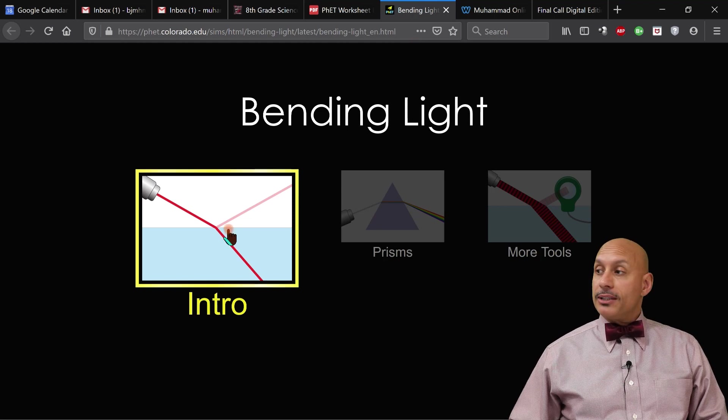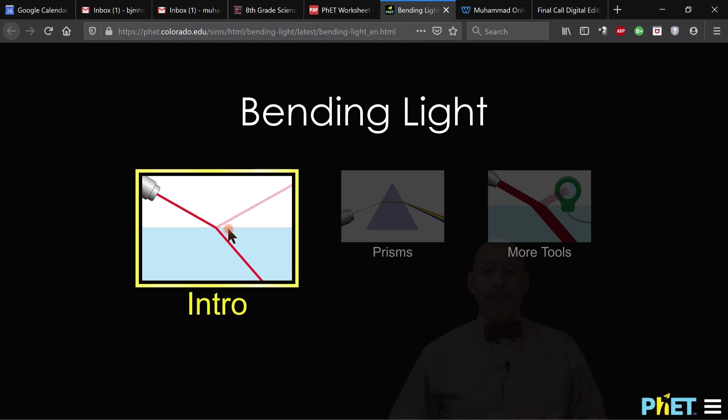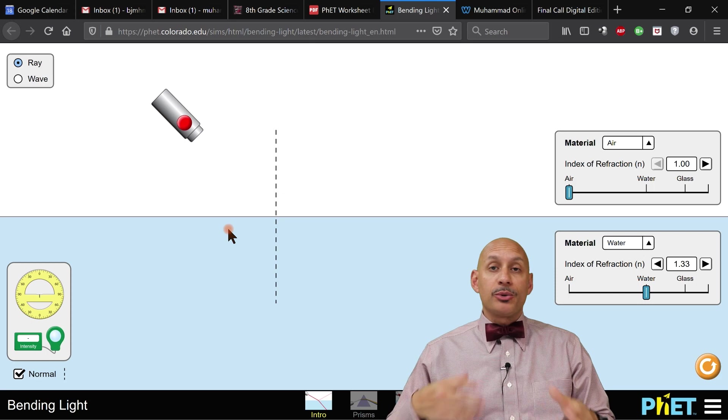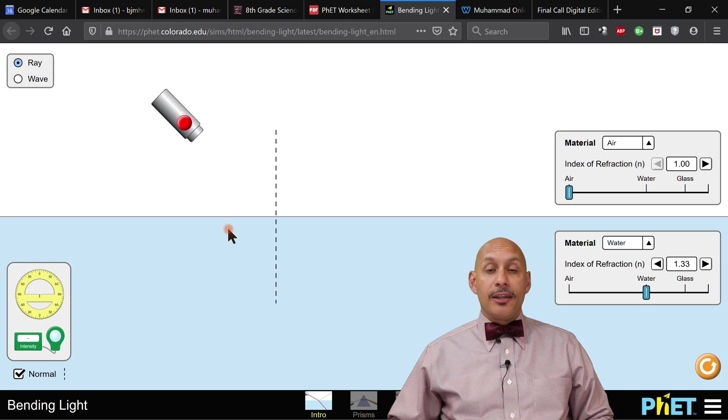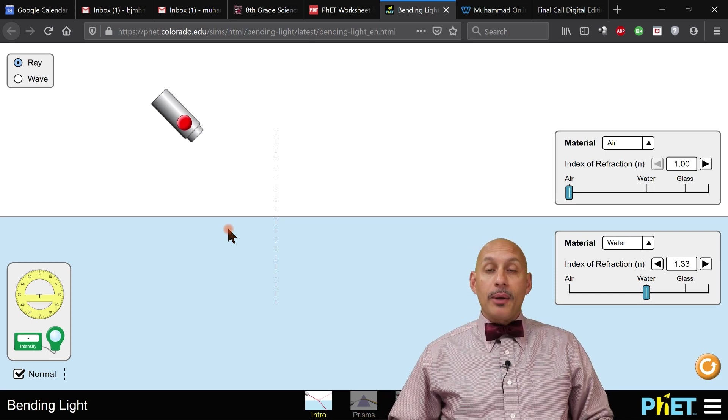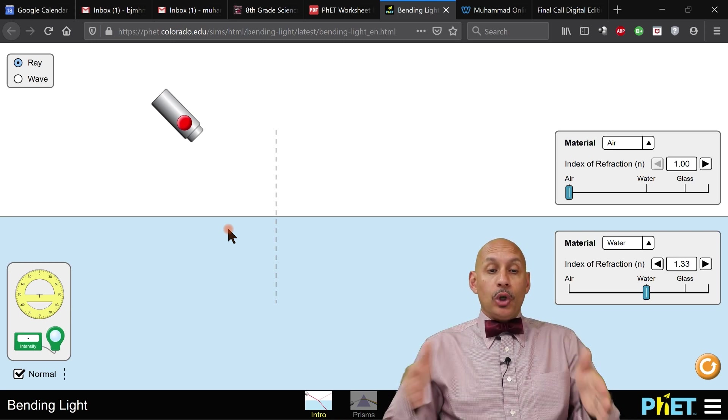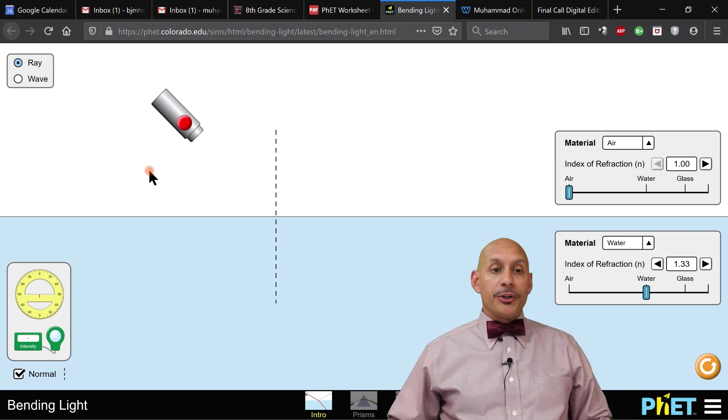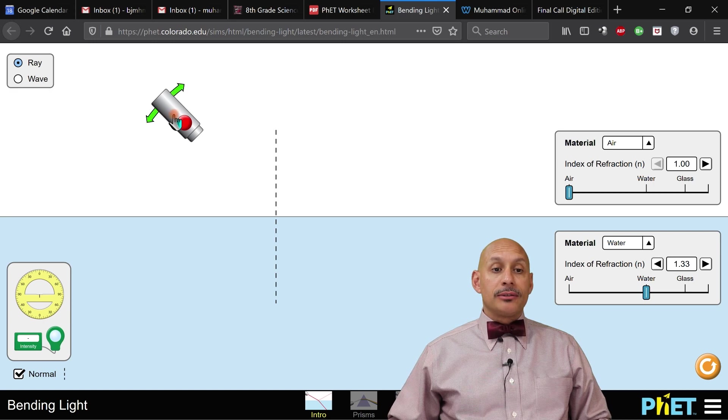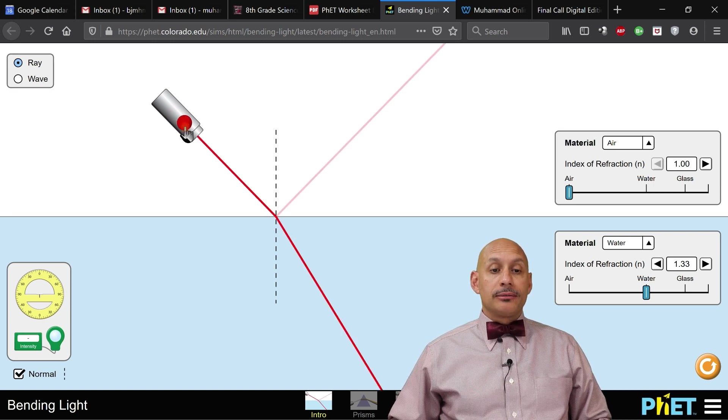We're going to be focusing on the intro tab. You'll be able to go to the prisms and other tools on your own and do all kinds of stuff. There's also a part to this lab that we may do. And this is the setup. If you look at this, you'll notice you have a laser to where when you push the button, the beam comes out, push the button again and the beam turns off.